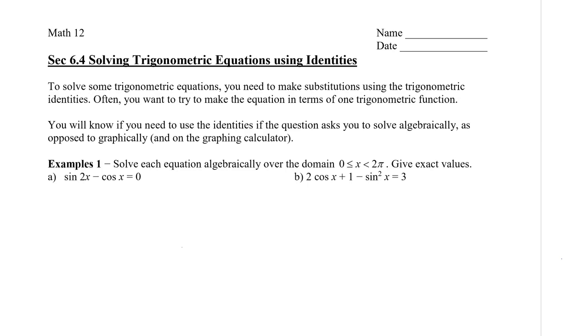Now you'll need to know how to use the identities when it asks you to solve algebraically as opposed to graphically. If it's graphically, then you can use decimals or the graphing calculator. So let's take a look at the first two examples. So it says to solve each equation algebraically over the domain from 0 to 2π and give exact values. That means that we're going to be using the graph or we're going to be using the special triangles.